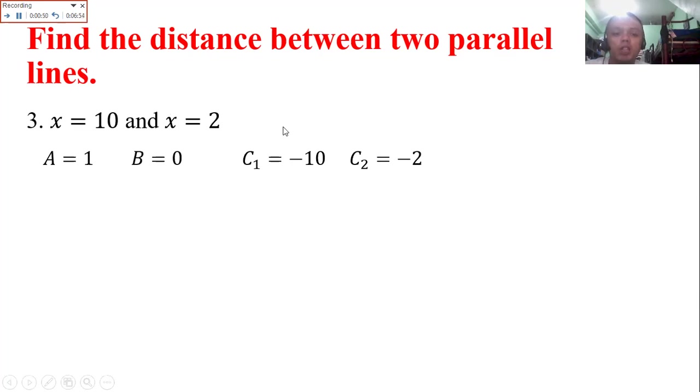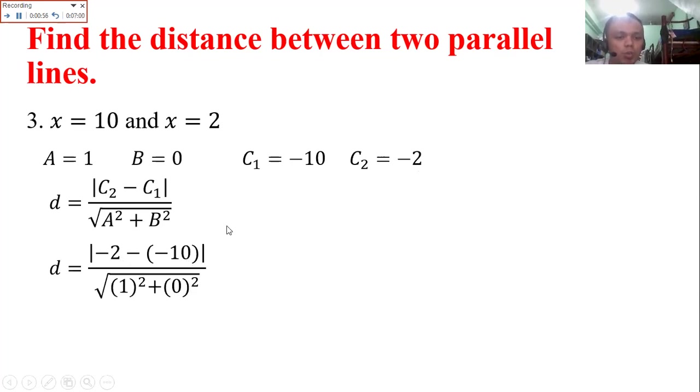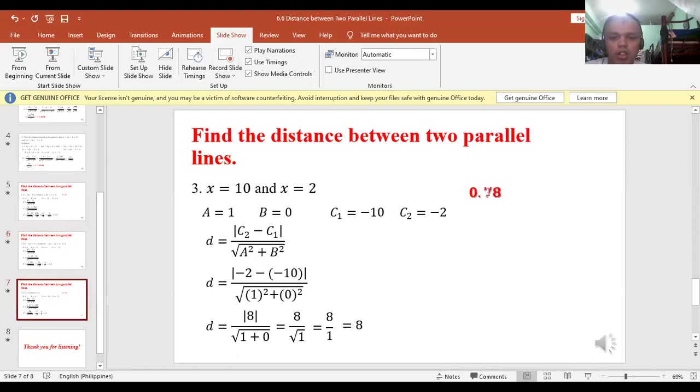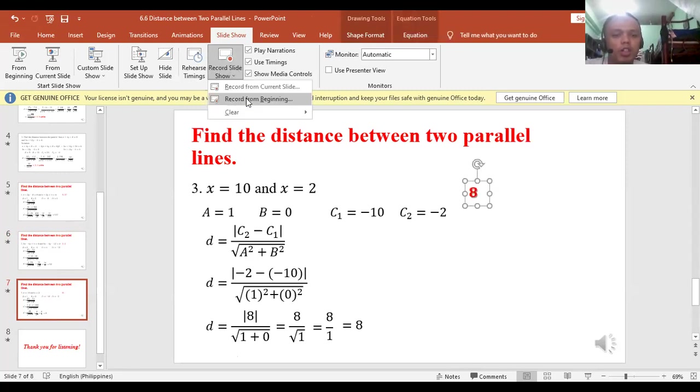Substitute: C sub 2 is negative 2 minus your C sub 1 is negative 10, all over 1 squared plus 0 squared. Negative 2 plus 10 equals 8, all over 1 plus 0. The square root of 1 is 1, so 8 over 1 is 8. Therefore, the distance is 8 units.